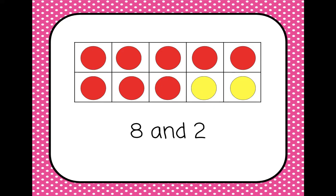Now we have eight red and two yellow, so eight and two are friendly numbers. Now we have seven red and three yellow, so seven and three are friendly numbers.